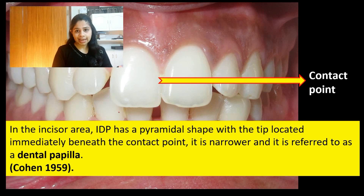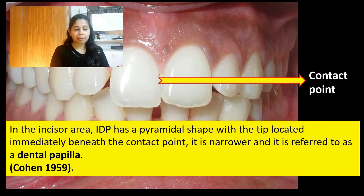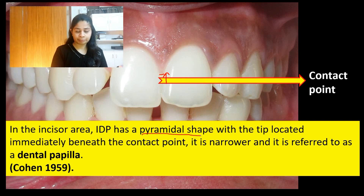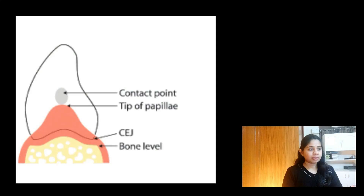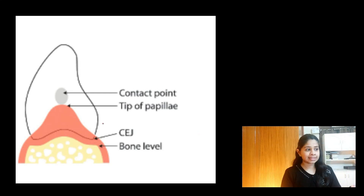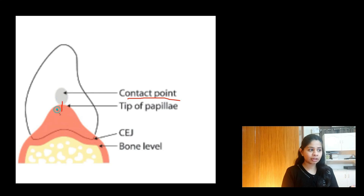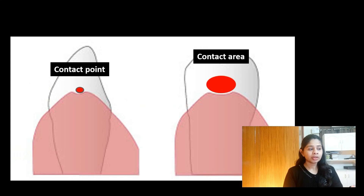In the incisor region, the tip of the interdental papilla lies just apical to the contact point in case of anterior teeth, and it is pyramidal in shape. If you take a sagittal section of the incisors, we can appreciate the contact point and see how the tip of the papilla lies just apical to or just beneath the contact point.